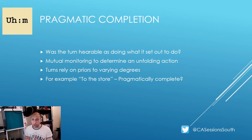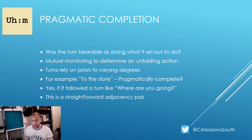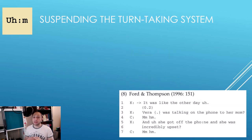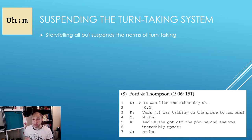For example, 'to the store' — can this be considered pragmatically complete? The answer is yes, if the turn followed a prior turn such as 'where are you going?' In CA terms, this would be a straightforward adjacency pair — a question-response sequence. Now we have some idea of how participants manage turn-taking so well. We'll turn to situations where turn-taking is suspended or circumvented. When someone tells a story, this activity all but suspends the norms of turn-taking — a topic we'll be covering later in our series.